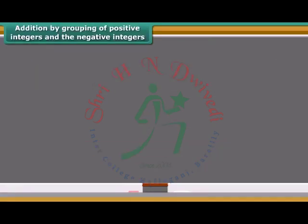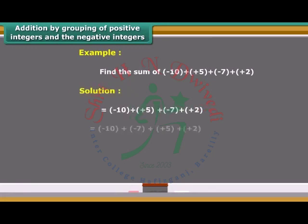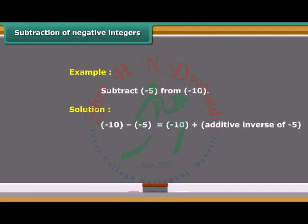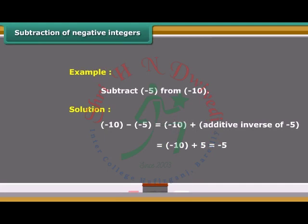For better understanding, we can solve one example. We arrange the numbers so that the positive integers and the negative integers are grouped together. Now let us find the value of minus 10 minus minus 5 using a number line. This is same as minus 10 and plus 5, as the additive inverse of minus 5 is 5. First, we move five steps to the right on the number line starting from minus 10. We reach to minus 5.